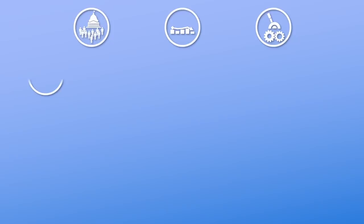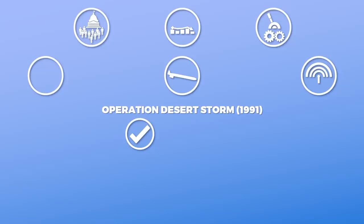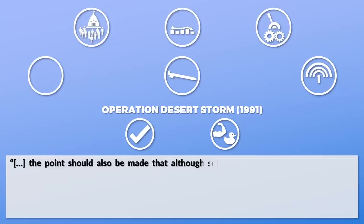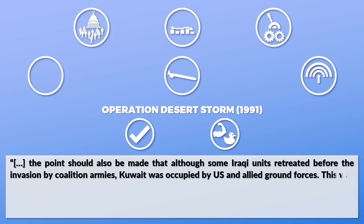Additionally, the technology limited the possibility of striking specific targets. This changed over the years — the introduction of stealth, precision-guided munitions, and electronic warfare allowed Operation Desert Storm to strike strategic targets successfully. Yet at the same time, the asymmetry in technology and training between the combatants was extensive. It should also be noted that although some Iraqi units retreated before the coalition invasion, Kuwait was liberated by US and Allied ground forces — this was not a victory of air power alone.